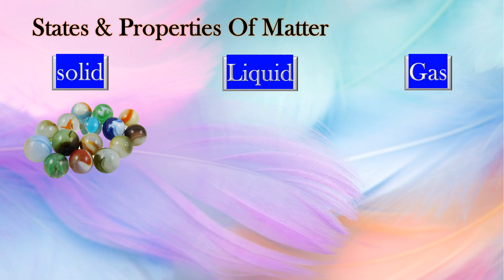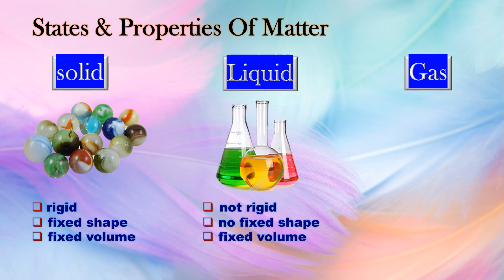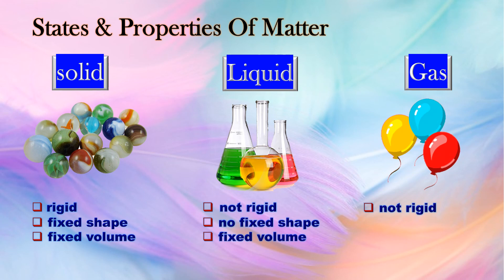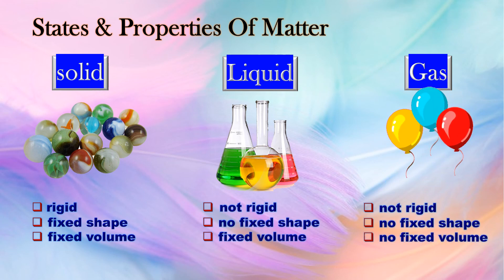Solid: rigid, fixed shape, fixed volume. Liquid: not rigid, no fixed shape, fixed volume. Gas: not rigid, no fixed shape, no fixed volume.